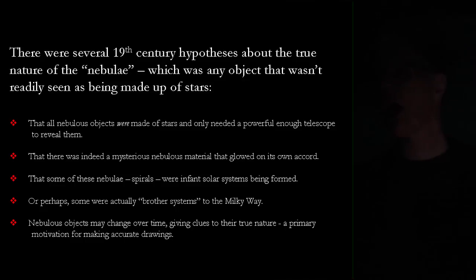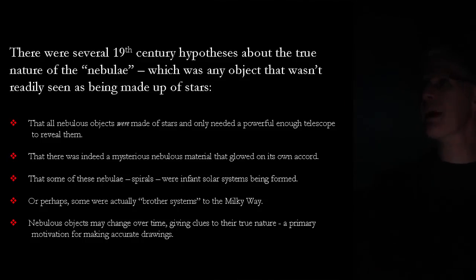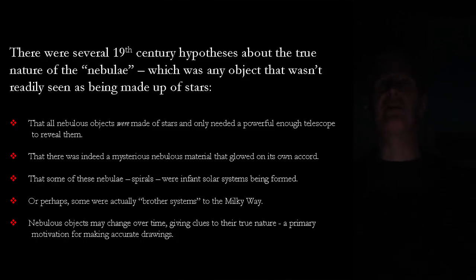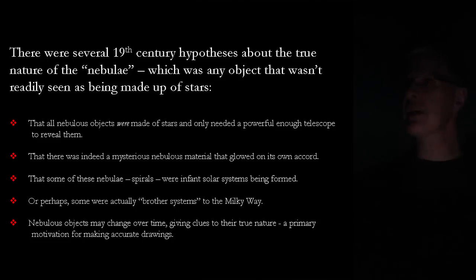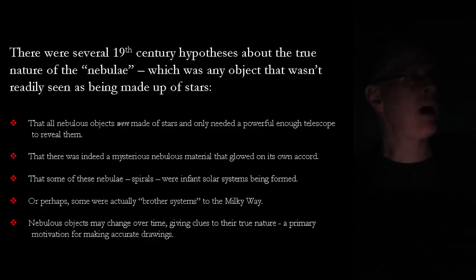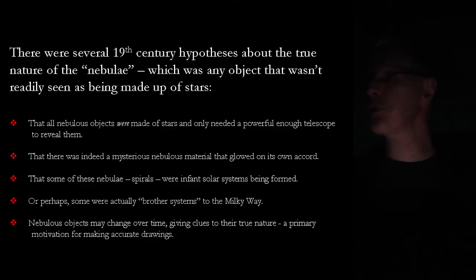When Messier found most of his objects, like M13, it was described as a nebula without a star. As telescopes improved, nebulous objects became more resolved. One hypothesis was that they were all stars; another was that there was some mysterious nebulous material that could condense on its own. Later in the 19th century, when Lord Ross built his 72-inch telescope and discovered spirals, he thought these were infant solar systems in the act of condensing. John Herschel thought some systems were actually brother systems to the Milky Way — what we'd call other galaxies today.